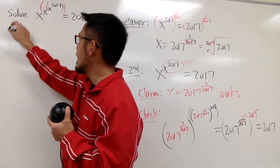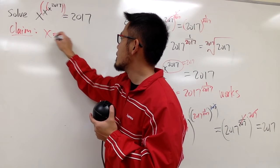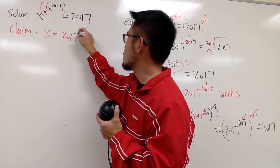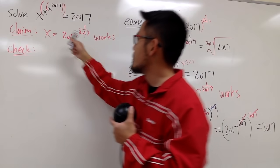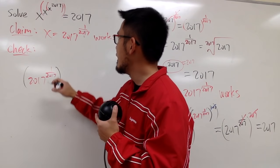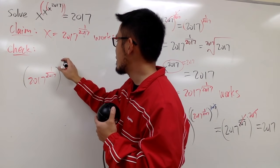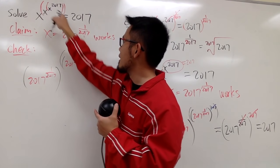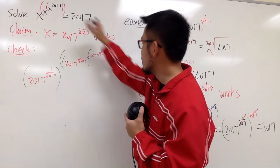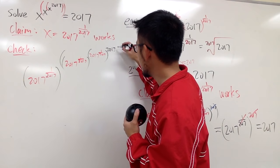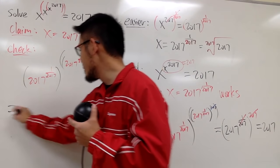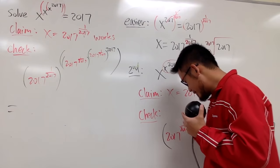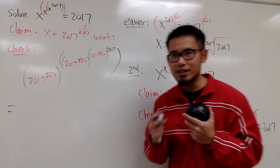So, let me just tell you that x equals 2017 raised to the 1 over 2017 works. Let's go ahead and do the check. Put this down into this x, and then raise to this power, and then put this down into this x, and then raise to this 2017 in black. Crazy looking expression, right? But it's really, really cool, because check this out.